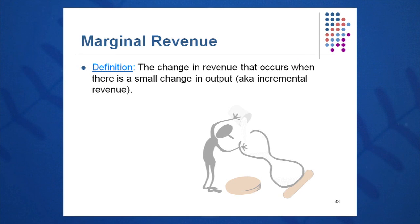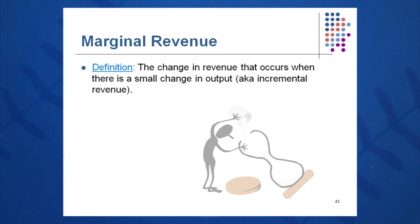You might also hear the term marginal revenue — the change in sales that occurs when there's a small change in output. Marginal typically means one more unit, whether it refers to revenue or sales.